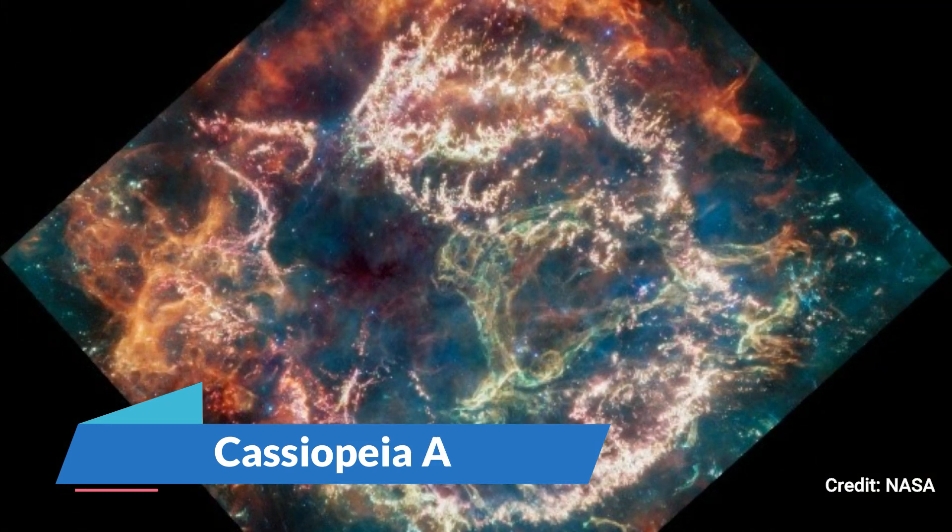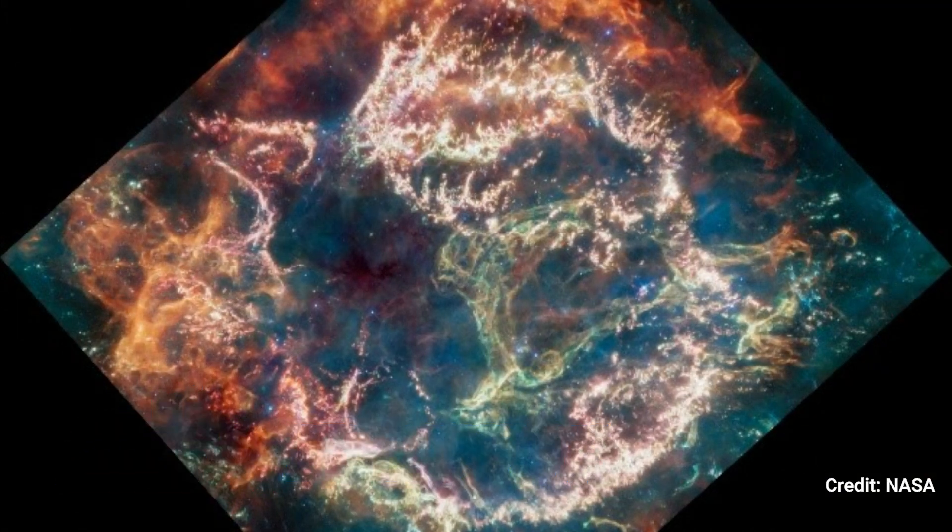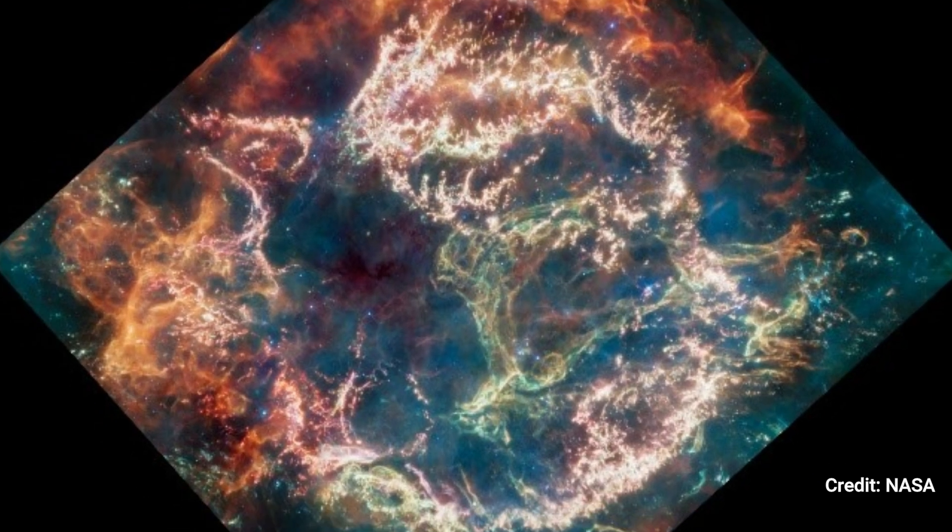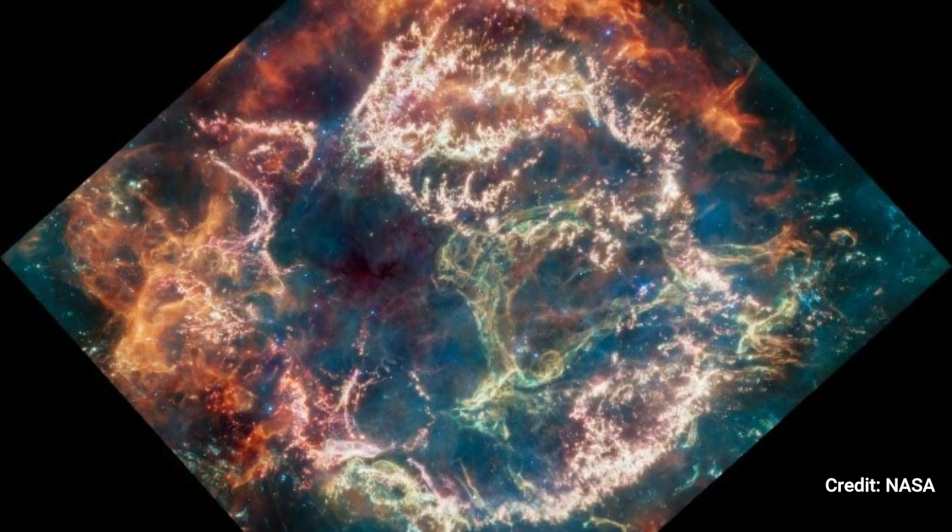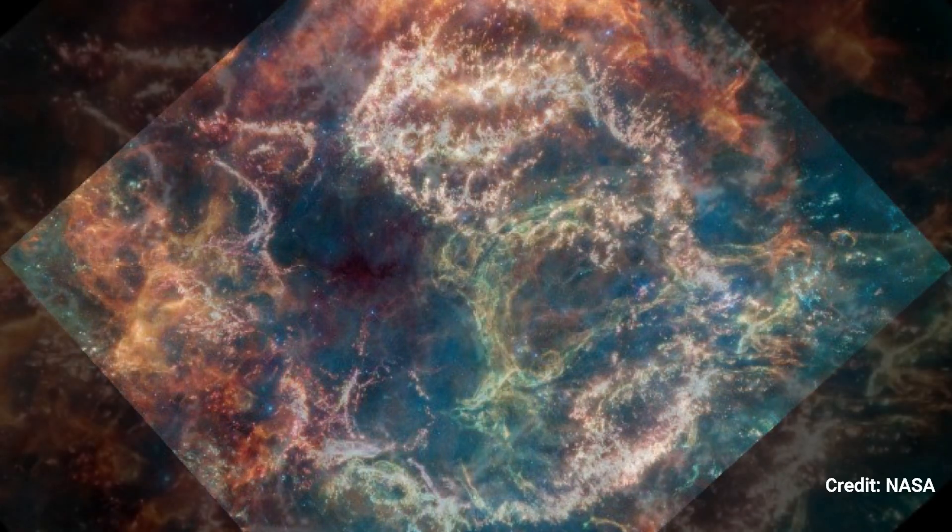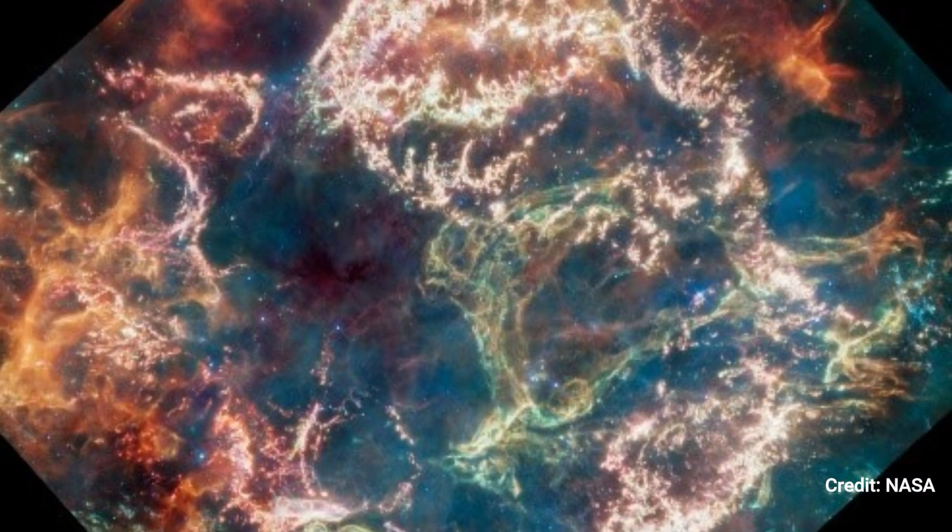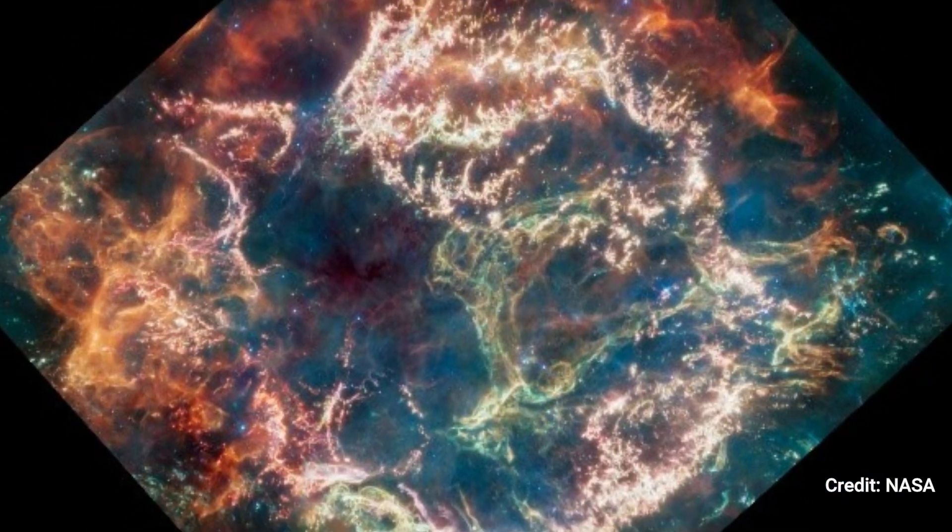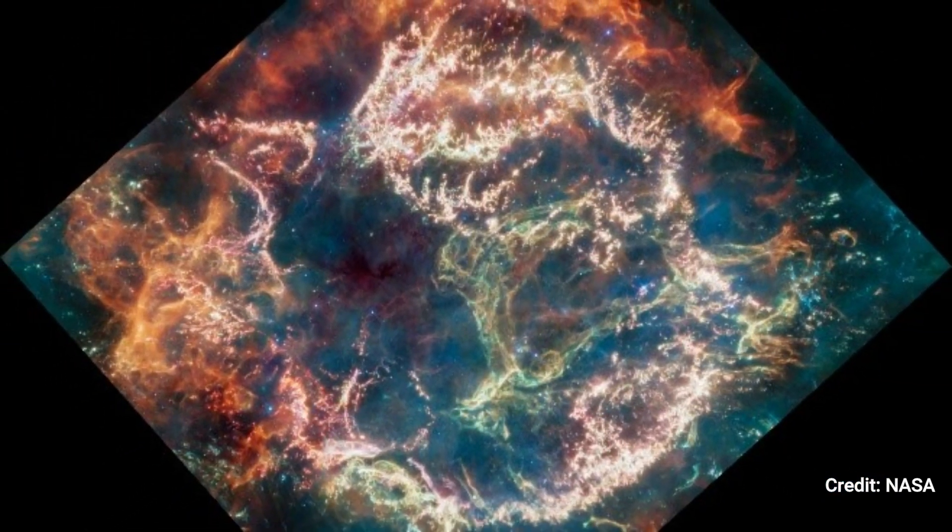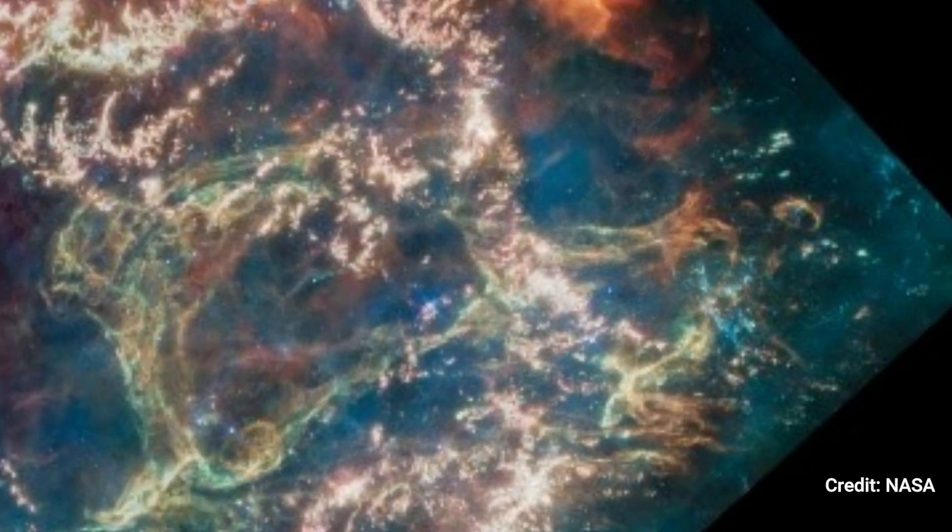Cassiopeia A is a supernova remnant in the constellation Cassiopeia, approximately 11,000 light-years from Earth. It is around 10 light-years long. This new image shows Cassiopeia in a new light thanks to data from Webb's mid-infrared instrument. Curtains of material look orange and crimson on the remnant's exterior, notably at the top and left, due to emission from heated dust.